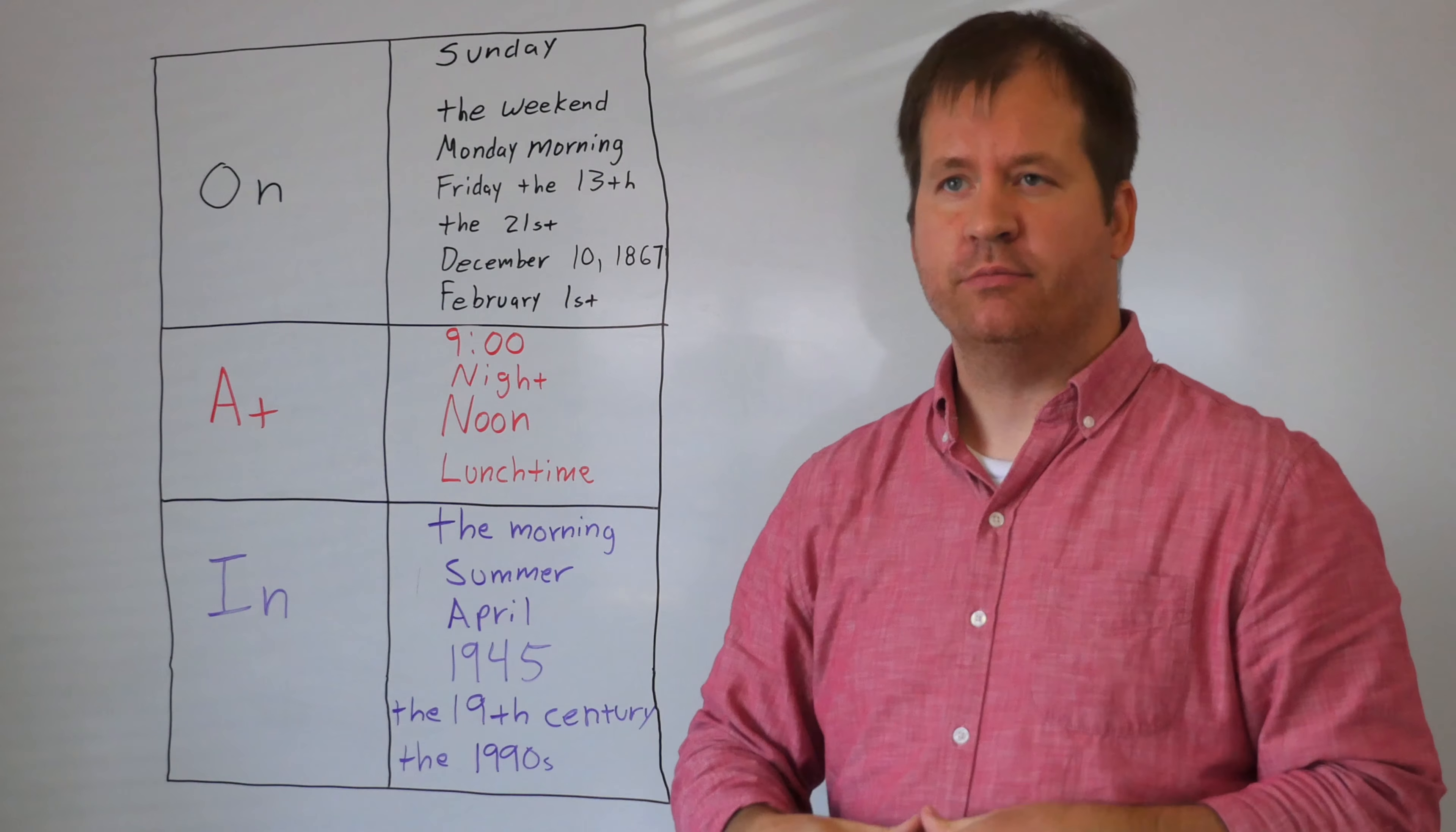Prepositions of time. Here we have prepositions of time. The first one we have is on, and it's used to discuss certain days of the week or portions of days of the week, and specific dates. I play baseball on the weekends. So on is used for certain days of the week.